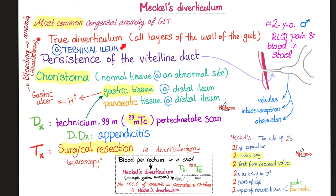Meckel's is a true diverticulum — a true outpouching — meaning all the layers of the wall of the gut are bulging outwards. If it's just one layer, you do not call it a true diverticulum. Where is it located? Small intestine — specifically the terminal ileum. Why did it happen? Usually persistence of the vitelline duct. This can act as a focus to cause volvulus, intussusception, or obstruction.